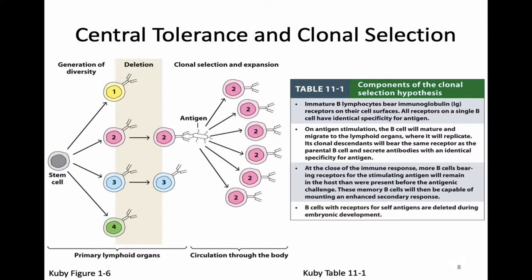Tolerance is a word that immunologists use to talk about how we avoid having self-reactive responses. Central tolerance specifically is the type of tolerance that happens in primary lymphoid organs. There are other types of tolerance that happen outside of primary lymphoid organs, called peripheral tolerance. We can often see flaws in central tolerance that make it very clear that peripheral tolerance must be doing some important things as well.